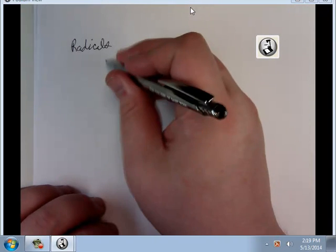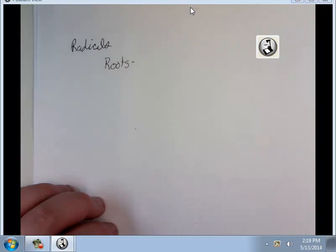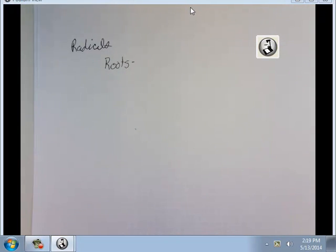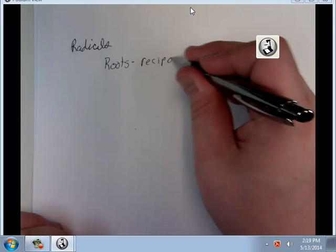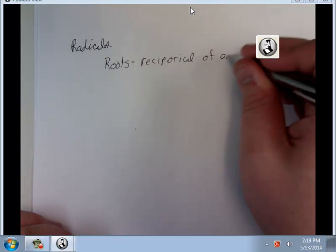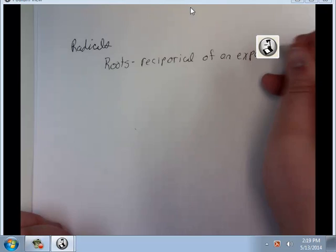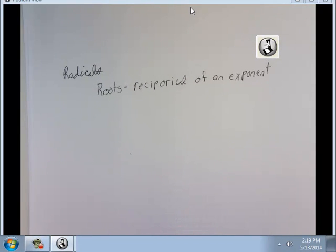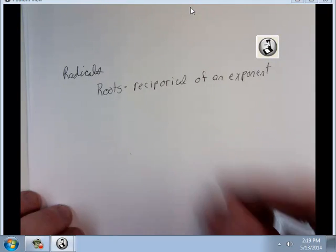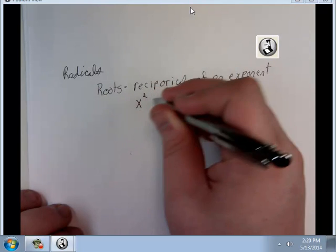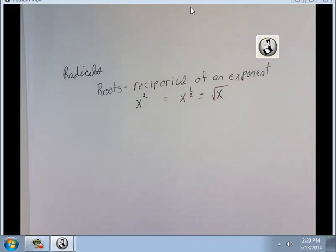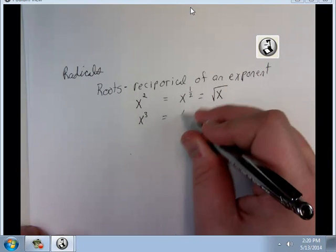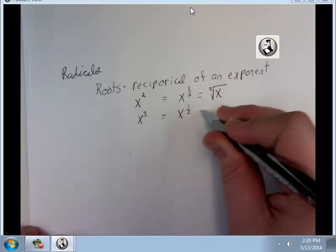Radicals are a subgroup of things called roots. And all a root is is just the reciprocal of an exponent. So x squared, something squared, the reciprocal of that would be x to the one-half, which is the square root. That's where the word comes from. Cube root would be the reciprocal of x to the third, which is x to the one-half, which is the cube root.